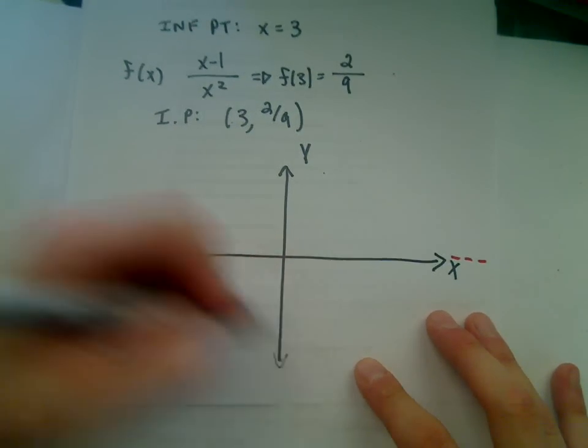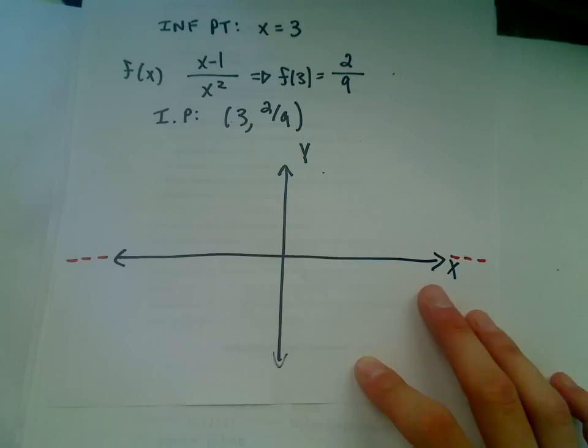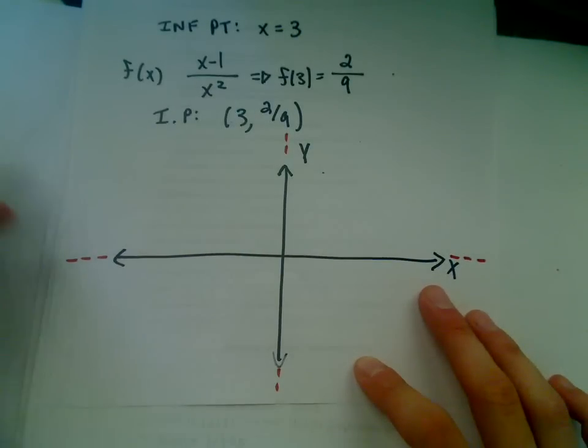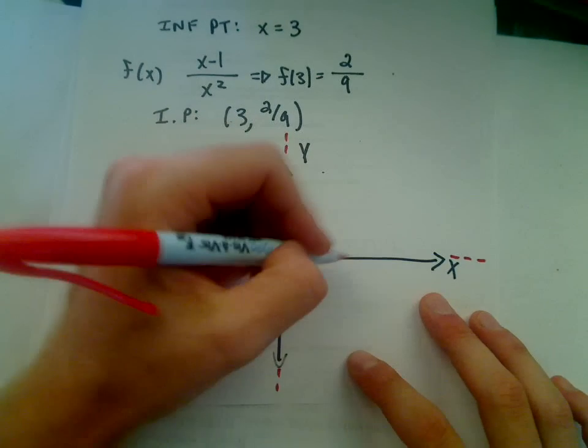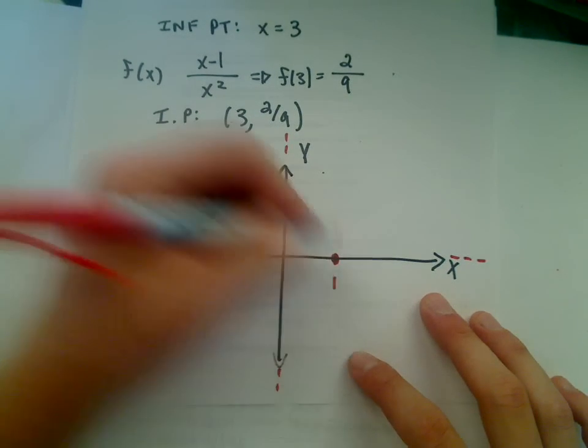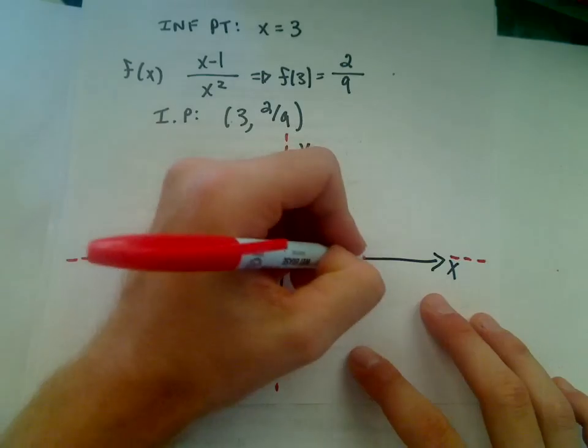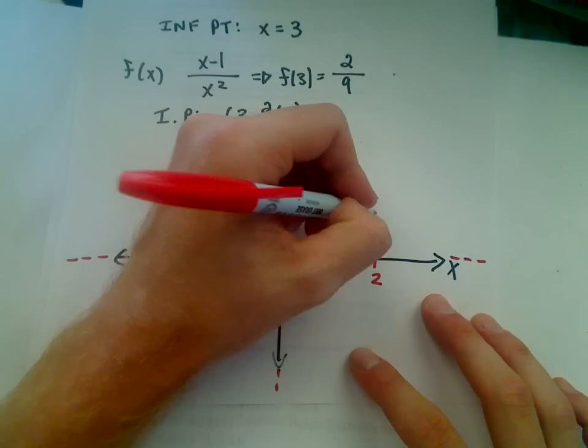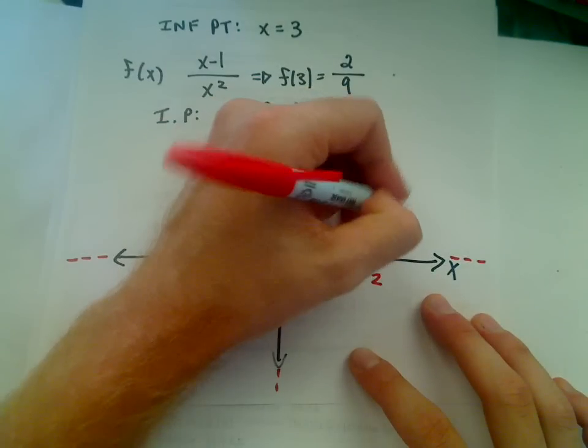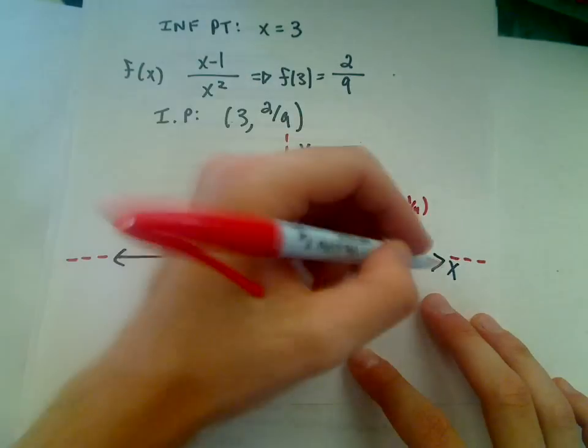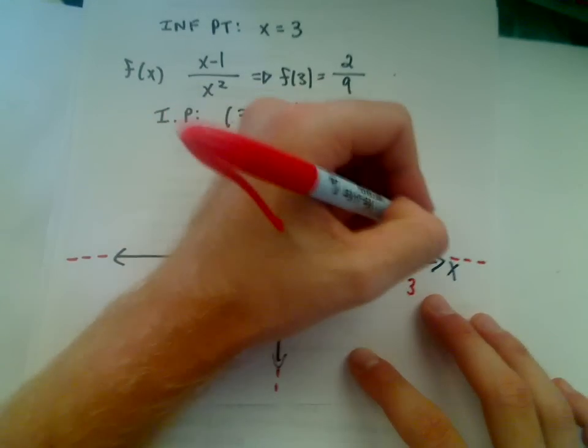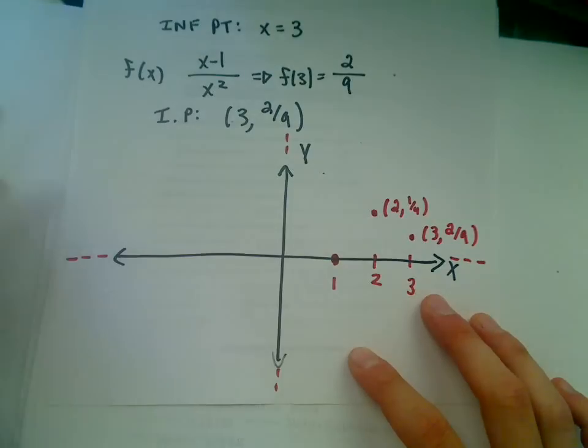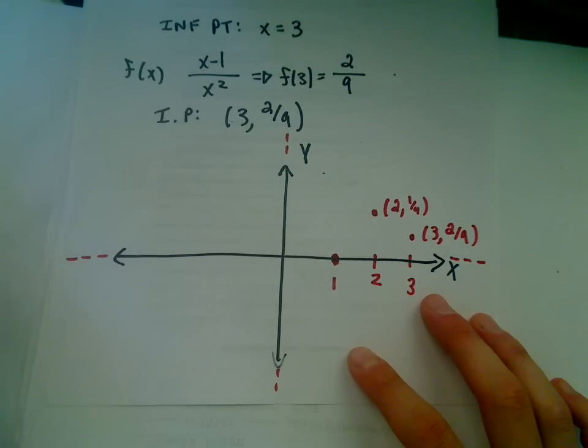Okay. Well, we said y equals zero was a horizontal asymptote. We said x equals zero was a vertical asymptote. So there are those points. We said that at x equals one, that was our x-intercept. Our local max was at two comma one-fourth. So I'm going to put it up here a little bit. And then over here at three comma two-ninths, we're going to have our inflection point.